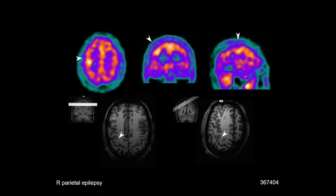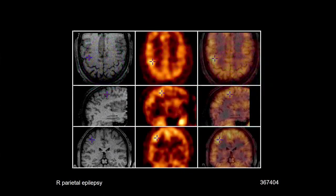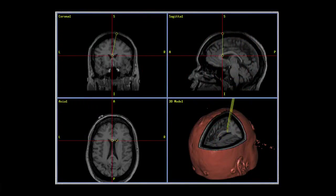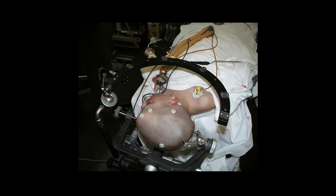Another example of ictal SPECT: a focal area of increased perfusion in the right parietal lobe corresponding to a dysplastic lesion on the right. This illustrates the imaging process patients undergo leading to surgery — registering SPECT with MRI, proceeding to stereotactic MRI, localising the lesion using the stereotactic system, and then undergoing surgery.